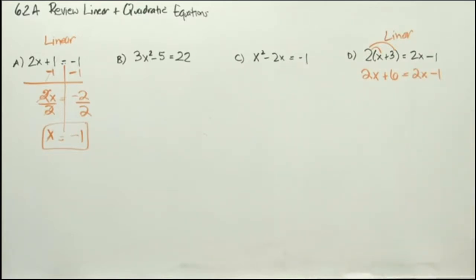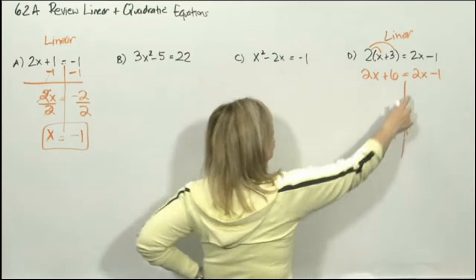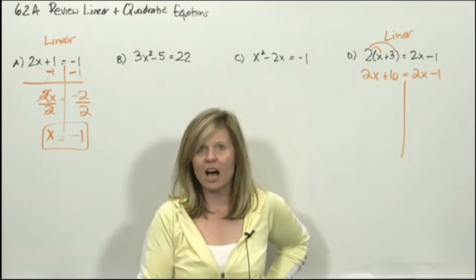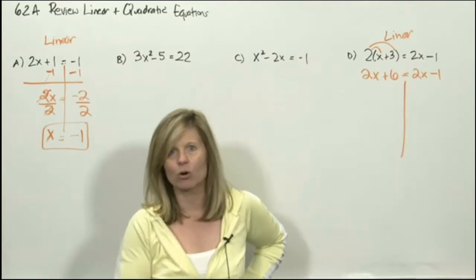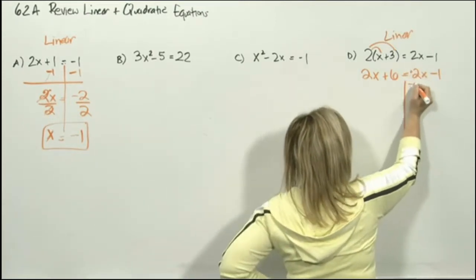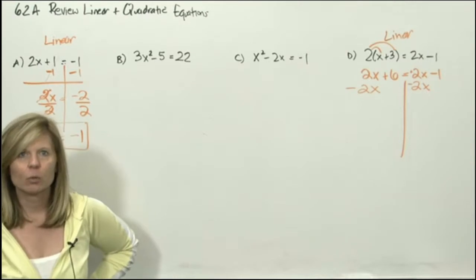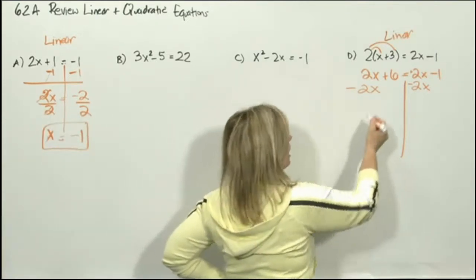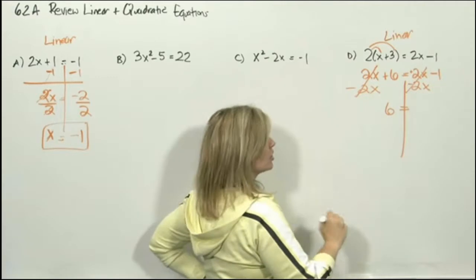The right side stays the same. My job is to solve for x, but I've got an x on the left and an x on the right. To solve an equation, you want your x's on the left. When we're solving equations, you never move an x by division — you only move an x by adding or subtracting. So to move the 2x, because it's positive, we subtract. 2x minus 2x is 0x, which means there are no x's left. The only thing on the left side is 6, and on the right side the x's cancel, leaving negative 1.